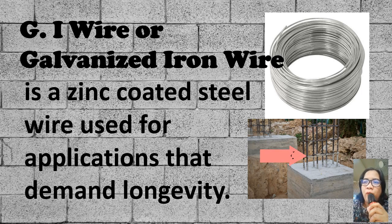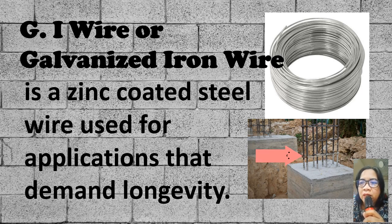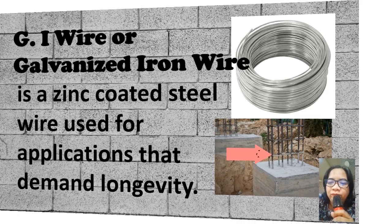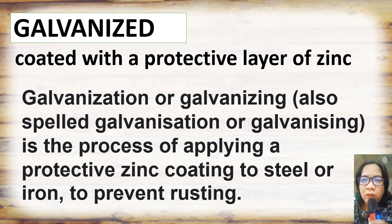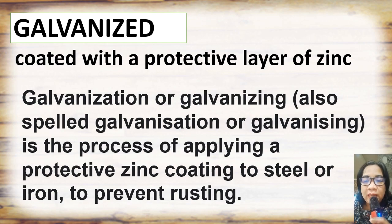G.I. wire, or galvanized iron wire, is a zinc-coated steel wire used for applications that demand longevity. G.I. wire can be used for a longer period of time because it is coated with a protective layer of zinc that prevents it from rusting.